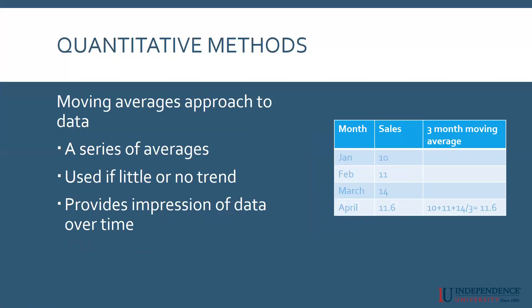The other method is called a moving averages approach. Here on this chart, you can see the months and the sales — I have 10,000, 11,000, 14,000. What you do is take the last three months — depending on the method it could be six or eight months — and figure out the average for those three months. So 10 plus 11 plus 14 divided by three is 11.6. My forecast for sales in April is 11.6.